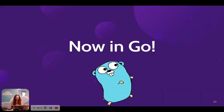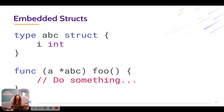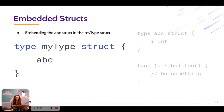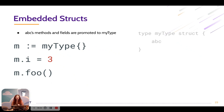Now in Go, before we can start translating, we need to know a concept called embedded structs. We have an abc struct with one field i of type int and one method foo. To embed the abc struct in another struct, we just write the name of the struct inside the struct we're embedding it in — in this case, embedding abc in the mytype struct. What this causes is that abc's fields and methods are promoted to mytype. So mytype has access to the i field and the foo method, exactly like abc does.